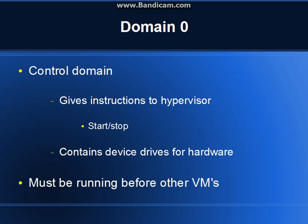Between Xen and the virtual machines or guest domains, we have domain 0, which is also called the control domain. Domain 0 gives instructions to the hypervisor such as starting and stopping virtual machines that are on the system, and contains the device drivers for the hardware which Xen does not contain itself and the virtual machines won't have until they connect with domain 0.